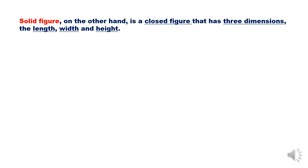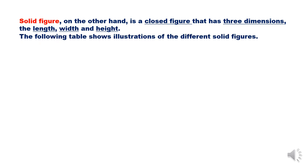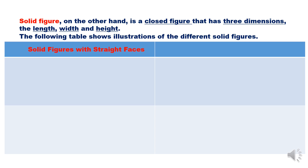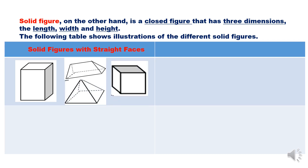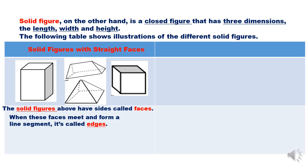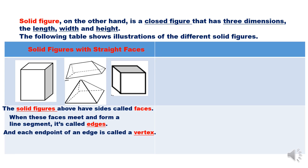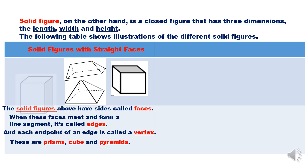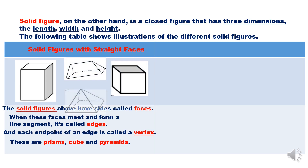A solid figure is a closed figure that has three dimensions: length, width, and height. The following table shows illustrations of different solid figures. Solid figures with straight faces have sides called faces; when these faces meet and form a line segment, it is called an edge, and the endpoint of an edge is called a vertex. These include prisms, cubes, and pyramids.